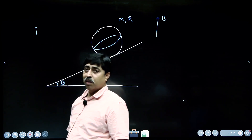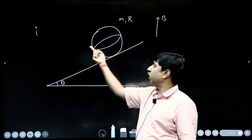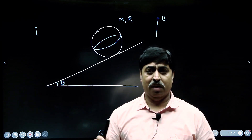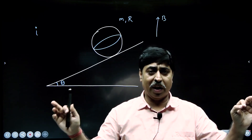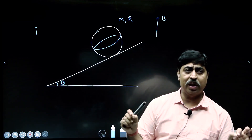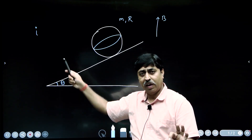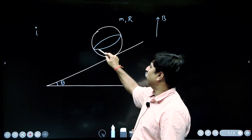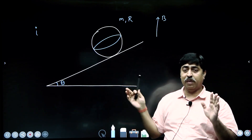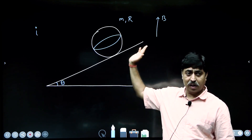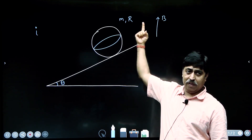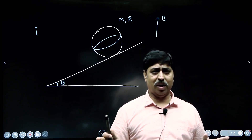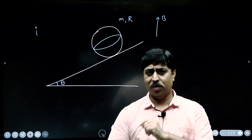This coil is given a current i. I will not tell you the direction of the current — you need to figure it out. The sphere is released and we find that the sphere remains in equilibrium on the inclined plane. We have to find the value of current i and also determine the direction of current in the coil.